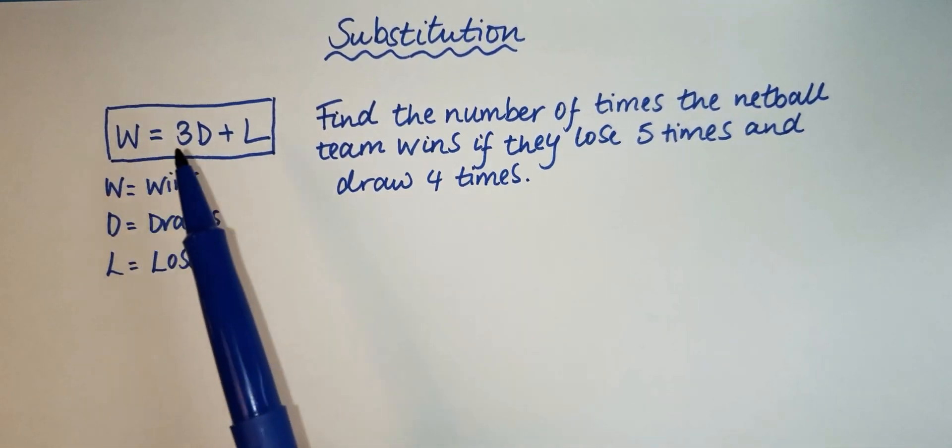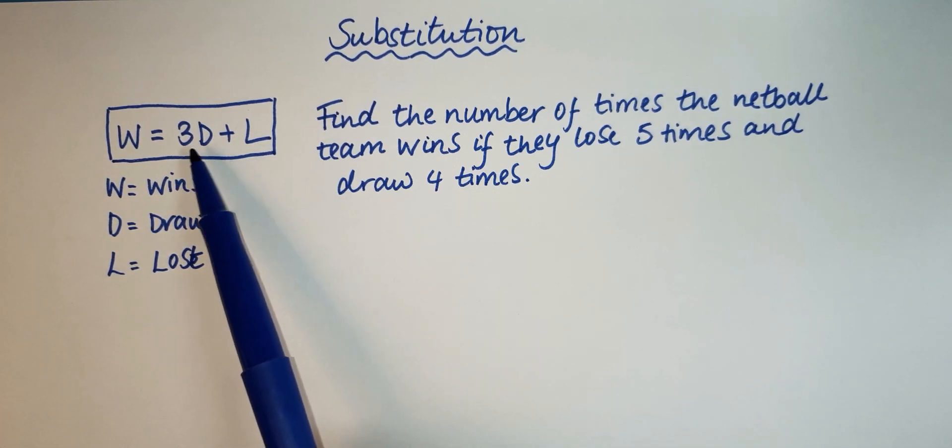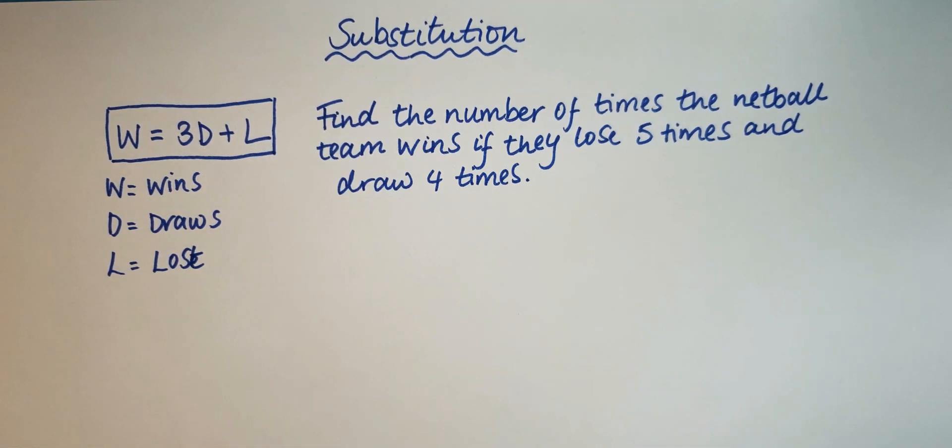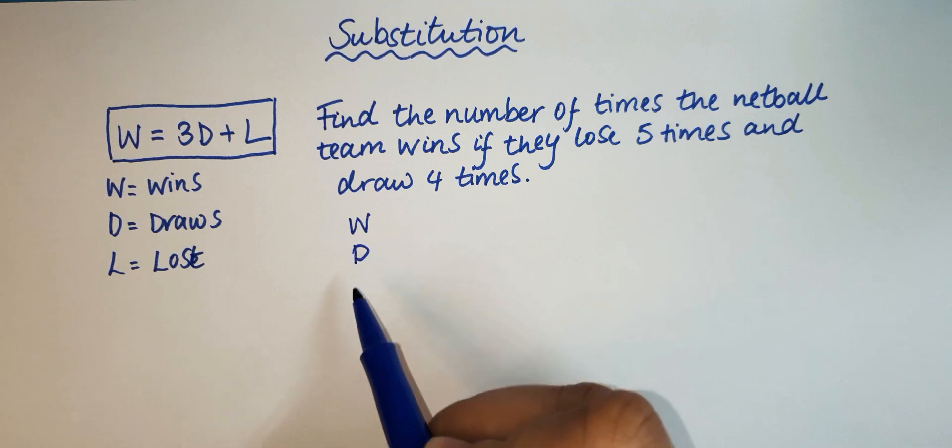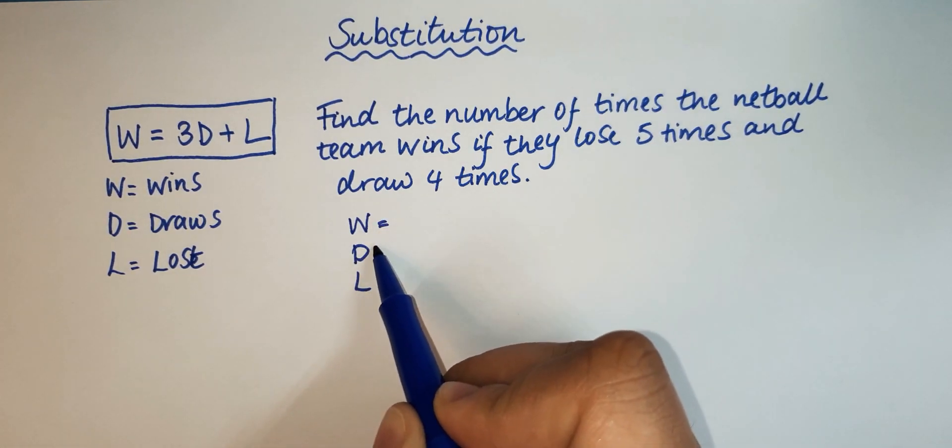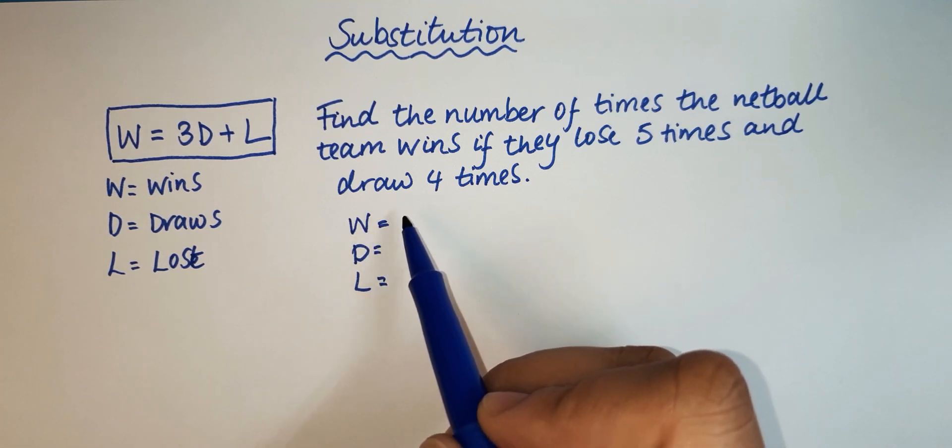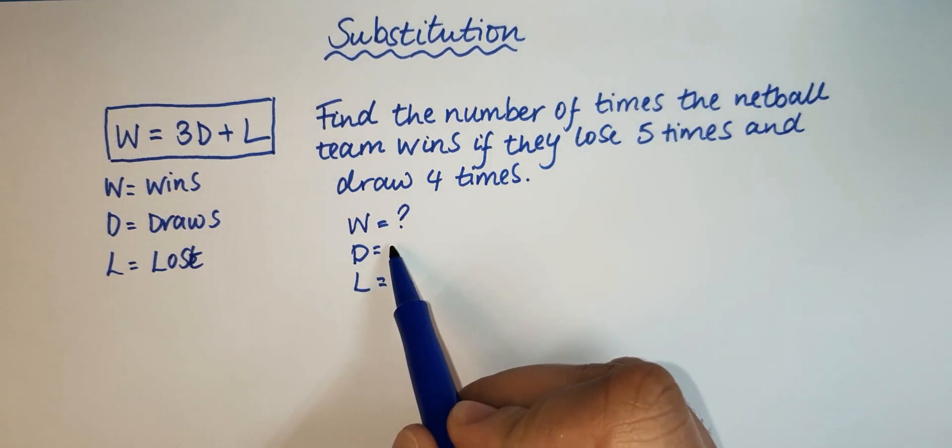It's talking about the wins, the draws, and the losses. So all we have to do is find out if we have the value of W, D, and L. So we can write a little list: W, D, L. W we don't have, that's what we're looking for, the number of wins, so we can put a question mark. The number of draws is four.